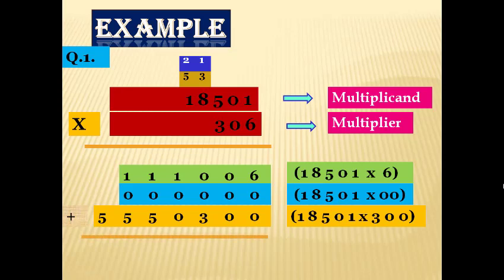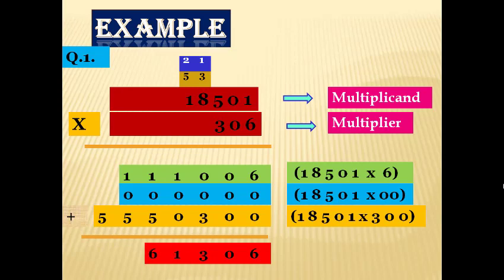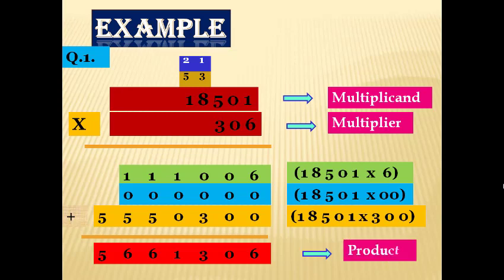Now add the partial products: 6 + 0 + 0 = 6; 0 + 0 + 0 = 0; 0 + 0 + 3 = 3; 1 + 0 + 0 = 1; 1 + 0 + 5 = 6; 5 with no additional value = 5. This is the answer and it is called the product.